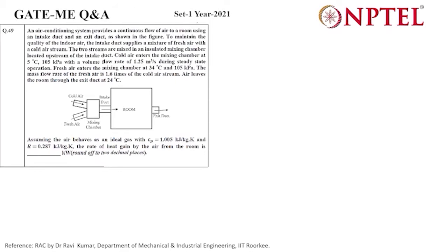This is a question from GATE 2021, set one. It involves the mixing of cold and hot streams. I'll give an overview of the question first and then we'll read it. A mixing of cold and hot streams occurs, resulting in mixed properties, and then that cold air is sent to the room.